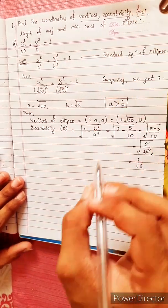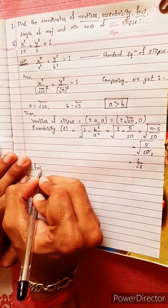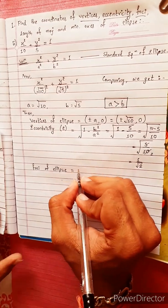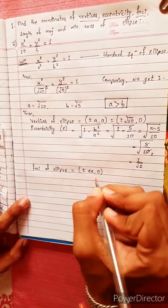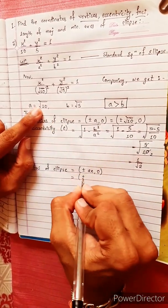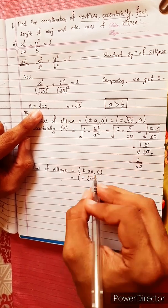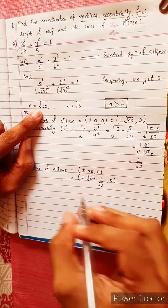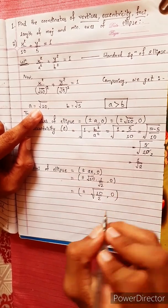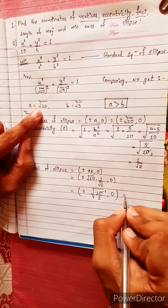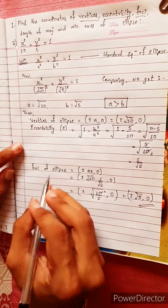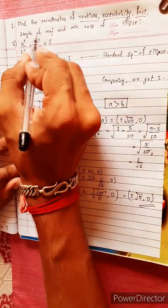Focus of ellipse equals plus minus ae comma 0. Substituting a equals under root 10 and e equals 1 by under root 2, we get plus minus under root 10 into 1 by under root 2 comma 0, which simplifies to plus minus under root 5 comma 0.